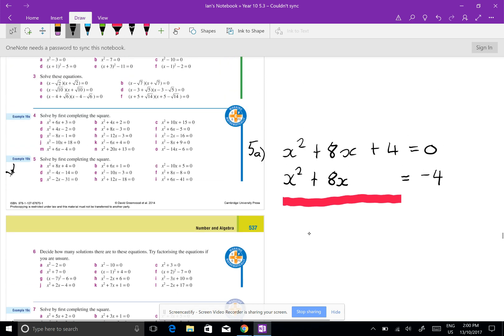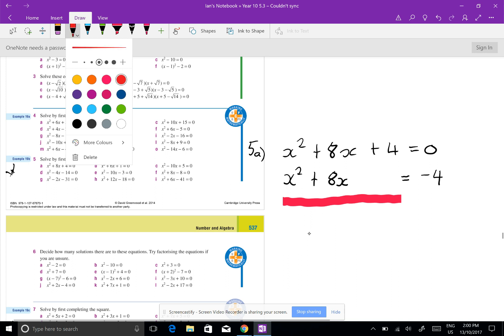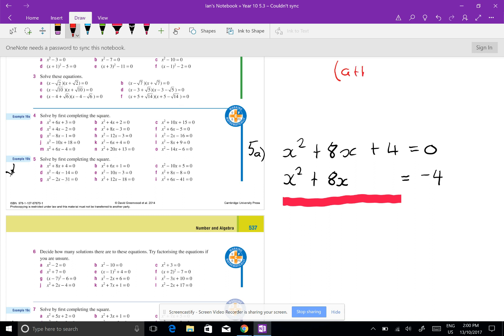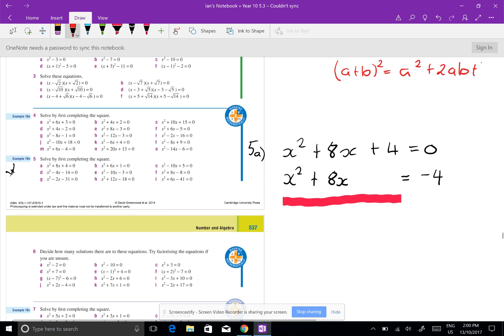So I'll go back a touch, and we need to remember that (a + b)² equals a² + 2ab + b². So if I want to get a perfect square, I have to halve this, the 2b, and square it, and that will give it to me in there.